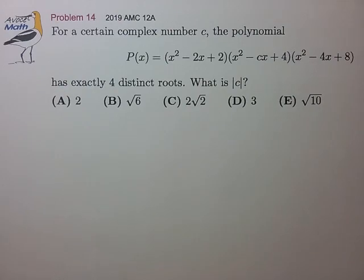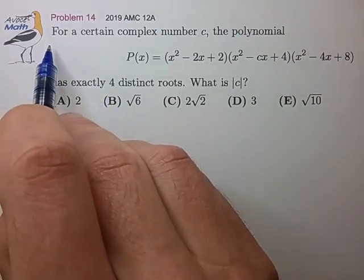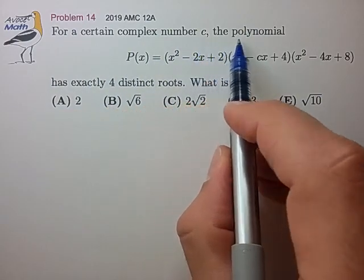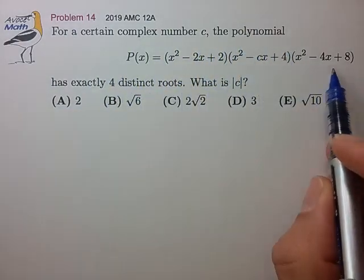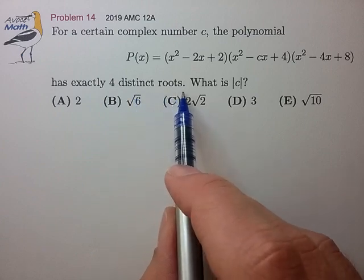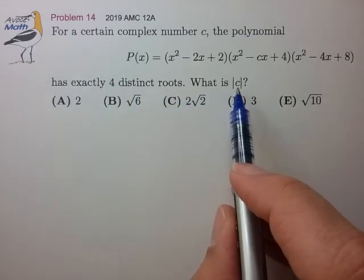Hi, this is problem 14 from the 2019 AMC 12A. For a certain complex number c, the polynomial shown has exactly four distinct roots. What is the absolute value of the parameter c?